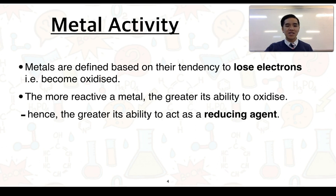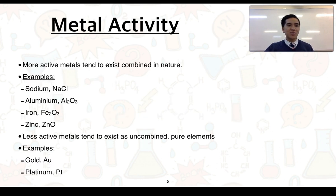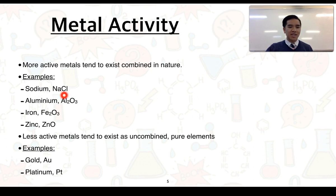Hence, the greater its ability to act as a reducing agent. Reactive or active metals tend to exist combined in nature due to their ability to readily lose electrons. Some examples include sodium existing as sodium chloride (NaCl), aluminium as aluminium oxide, iron as iron oxide, and zinc as zinc oxide.